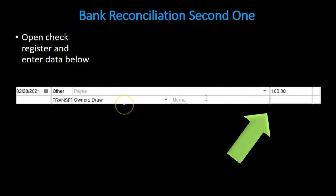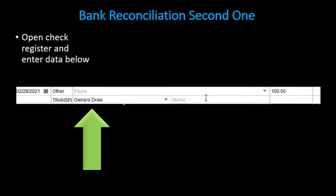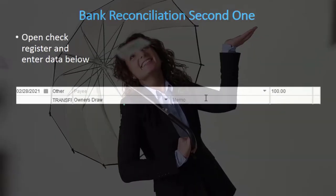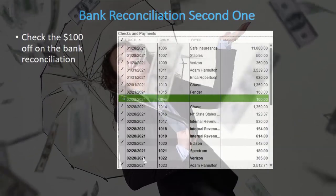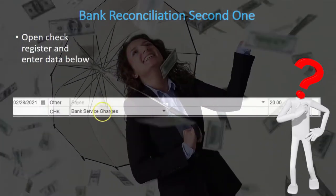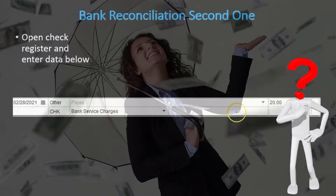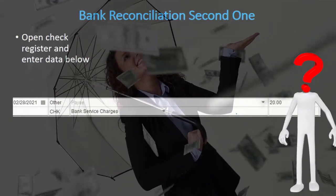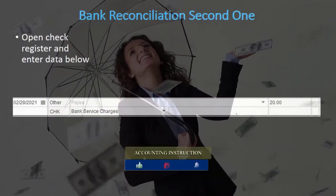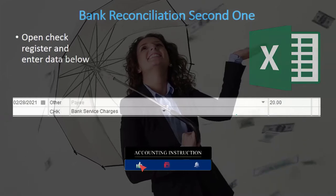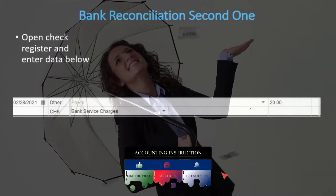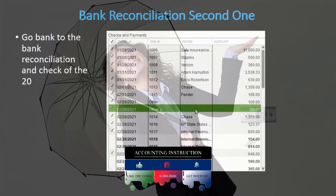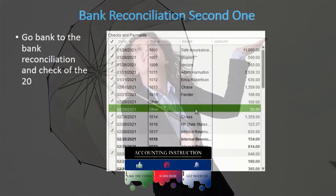We go to the register and record the $100 as an owner draw, decreasing the cash account and recording the other side to owner draws. Then we jump back to the bank reconciliation, mark it as adjusted, and check it off. We do the same thing for the $20 bank service charges, and then we're able to jump back and check it off in the bank reconciliation.